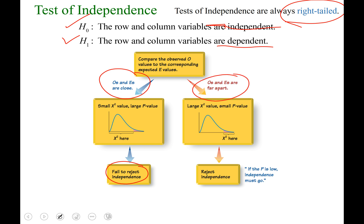Other cases, if your O's and E's are far apart, so what you expected to observe was nothing like what you actually observed, there'd be a large chi-squared and a small p-value, and in that case we would reject independence.